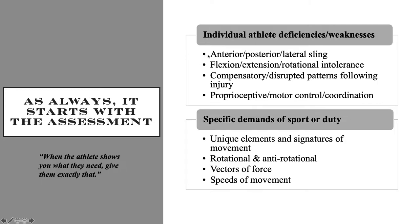We're looking at the individual athlete's deficiencies and weaknesses — anterior, posterior, lateral sling. We can manually test those. I commonly see somebody strong on the left side of the anterior sling but weak on the right, so we're looking at independent bilateral differences. We also look at flexion, extension, and rotational intolerances, thinking back to those spiral chains, and how much compensatory or aberrant movement patterns they're showing — especially athletes coming off injury — and proprioceptive motor control coordination.